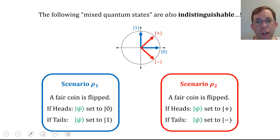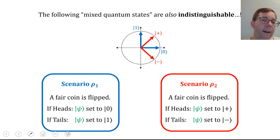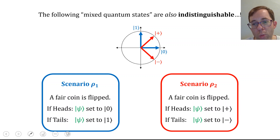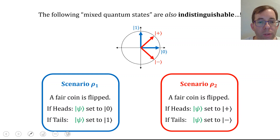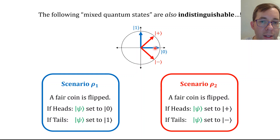I'll end on an interesting note that will arise in the next lecture: the following so-called mixed states are also indistinguishable, and you can think about this in preparation for lecture 6. Imagine two scenarios: scenario row 1 (blue) and scenario row 2 (red). In scenario row 1, somebody flips a fair coin—if heads, they set a qubit psi to state ket |0⟩; if tails, they set psi to state ket |1⟩. You don't get to see the coin flip or watch them prepare the state.